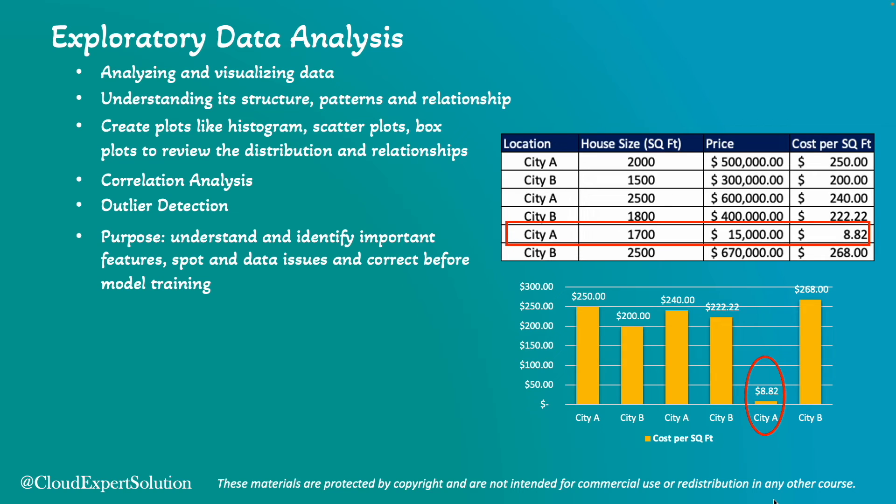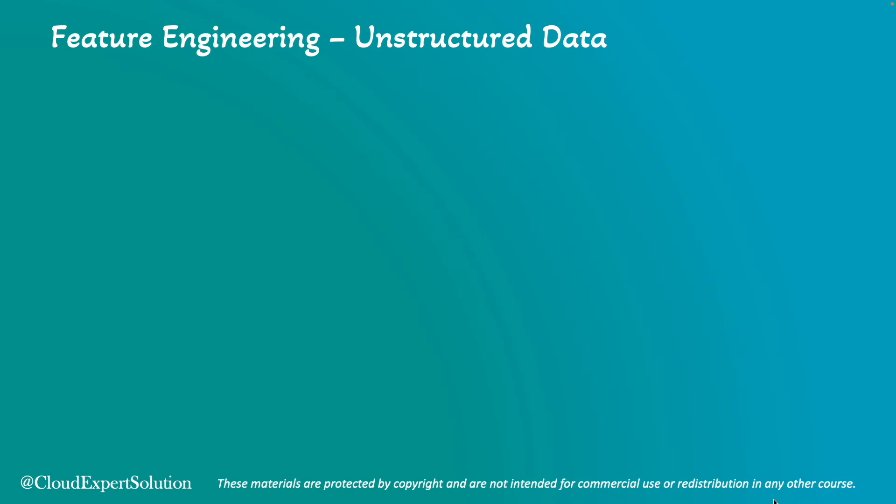So far, we have discussed feature engineering for structured data, where data is organized in a predefined schema. However, when it comes to feature engineering for unstructured data, the methods vary widely. Unstructured data includes formats like text, image file, audio file, video file, and more. The main challenge with unstructured data is that it cannot be organized in a predefined structure or tabular format.